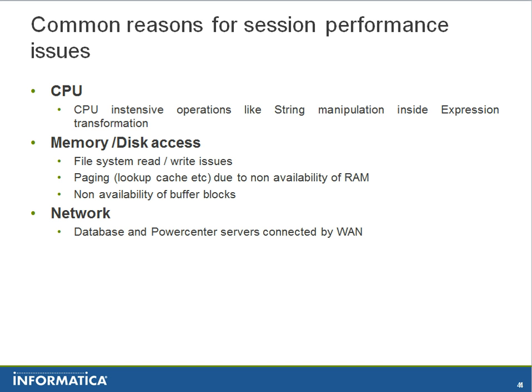When it comes to memory or disk access, there are many transformations which make use of the file system. For example, lookup cache gets created in the file system, and mostly third-party file systems are used. When there are issues reading and writing into those file systems, you could have performance issues in Power Center. Also, when there is not enough RAM available, data is more often paged out to disk, and this could have a negative impact on session performance.